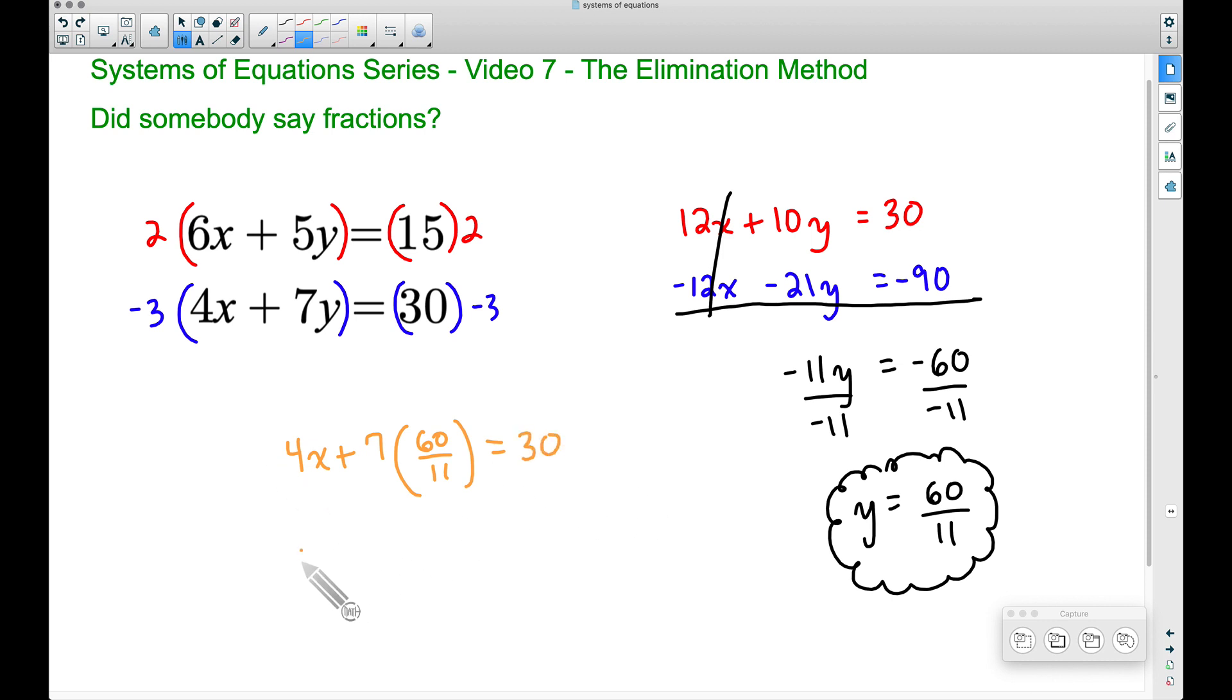And now we need to solve for x. Bringing down our 4x plus 7 times 60 over 11. Well, 7 times 60 is 420, and this is over 11. This is equal to 30.